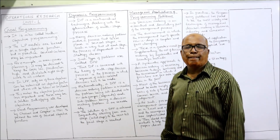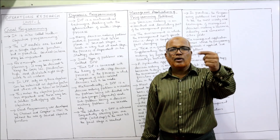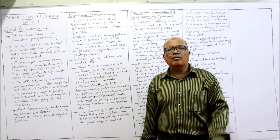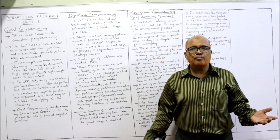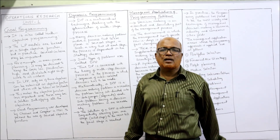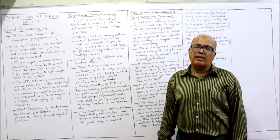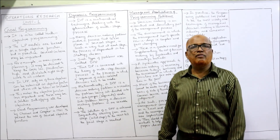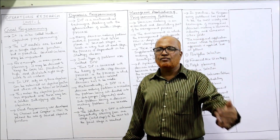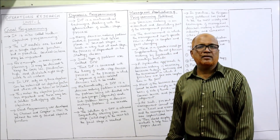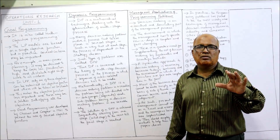In linear programming, only one of these objectives can be retained as the objective function and the remaining become constraints. This makes the objective function less important and there may not be solutions satisfying all objectives. In a complex problem with multiple objectives, we cannot apply LP — goal programming comes to the rescue. Goal programming was developed by Charnes and Cooper in 1961 to permit the use of several objective functions.